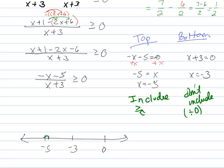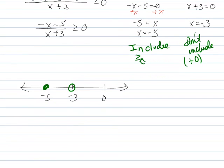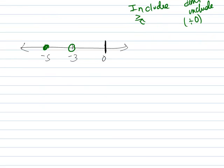So am I going to include this point here on the top? Yeah, I'm going to include it because I've got this greater than or equal to sign. Am I going to include the point on the bottom? No, I'm not going to include it because I don't divide by 0. So I'm going to go ahead and get this going. I've got my 0 and negative 3 and negative 5. I'm including the negative 5, but I'm not including the negative 3. So how many sections do I have? I have one, two, three sections.